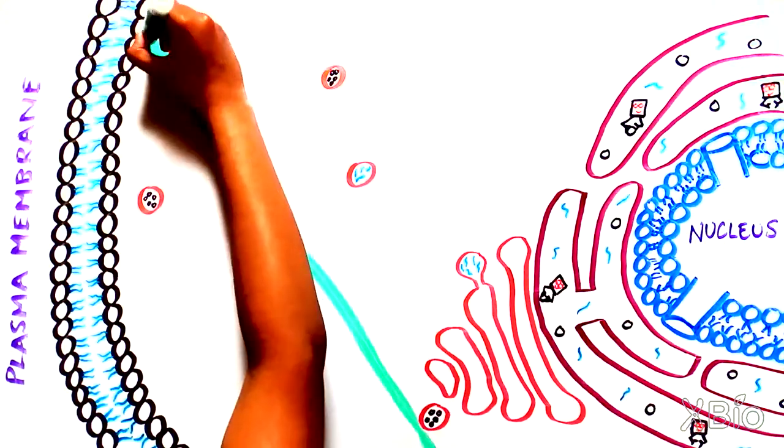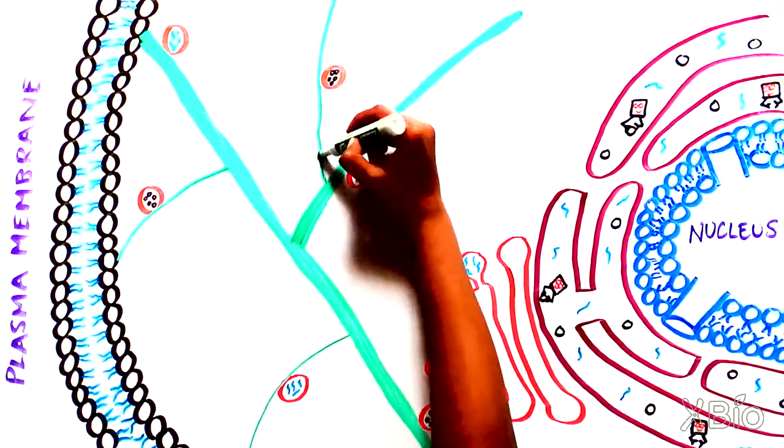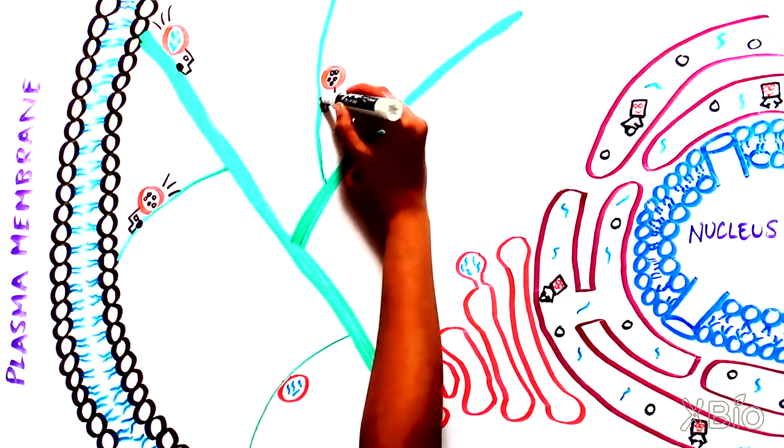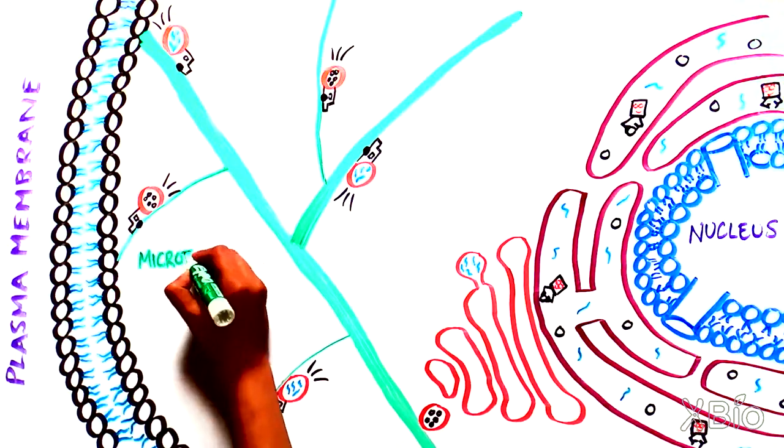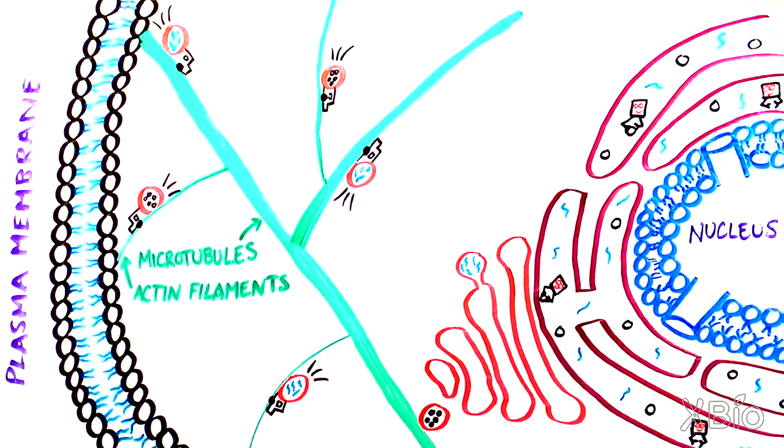Analogous to the way in which packages can be taken around a factory along hallways, vesicles are transported by motor proteins along long protein fibers, called microtubules and actin filaments, which make up the cell's cytoskeleton.